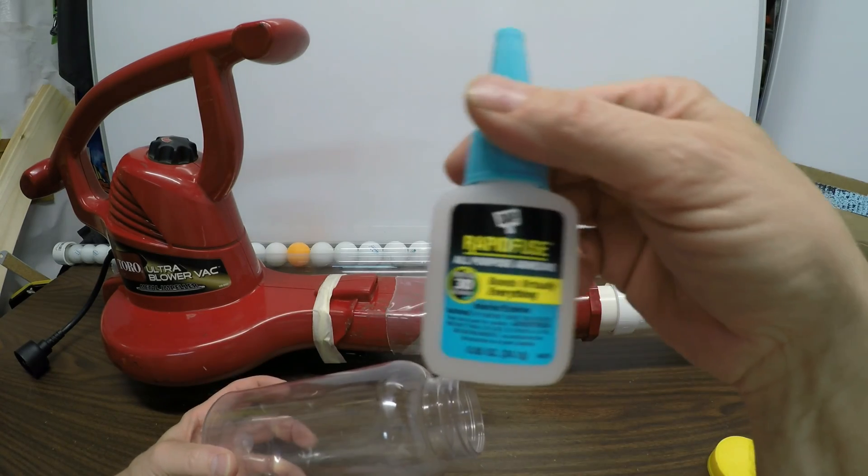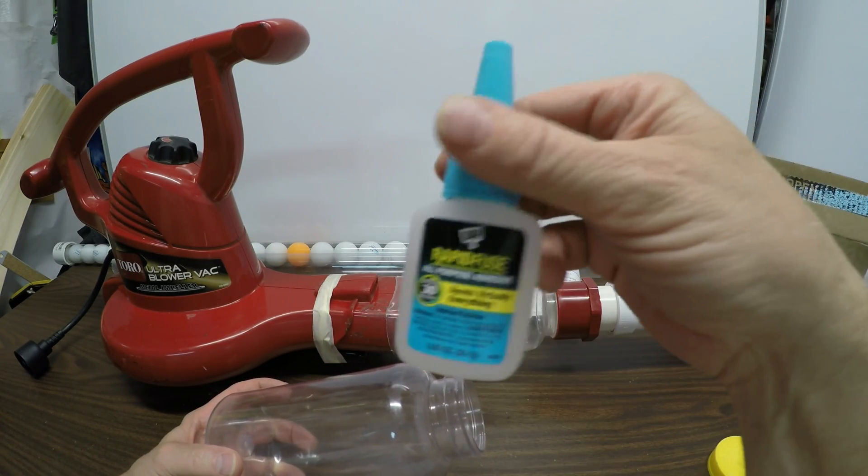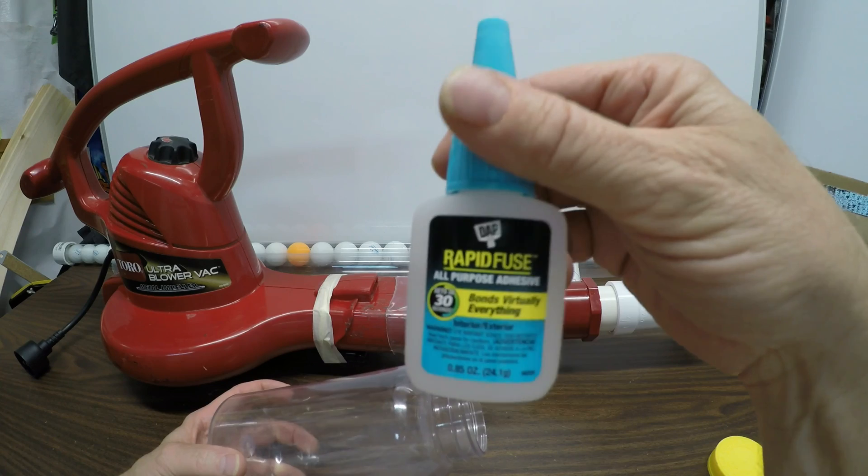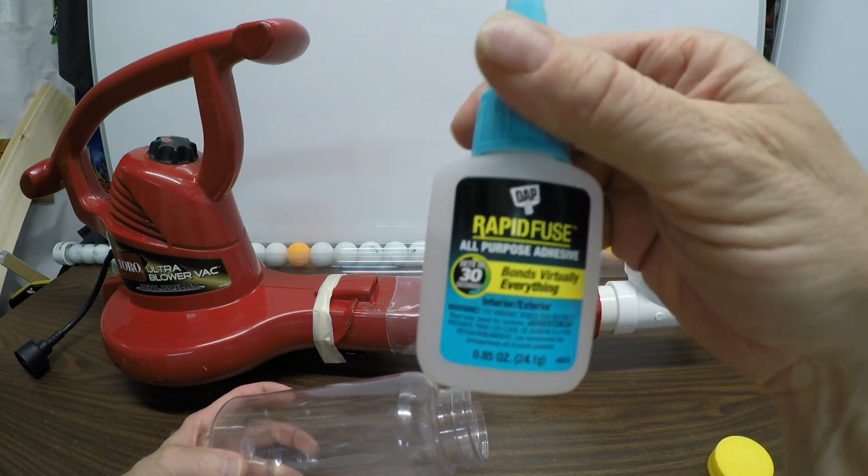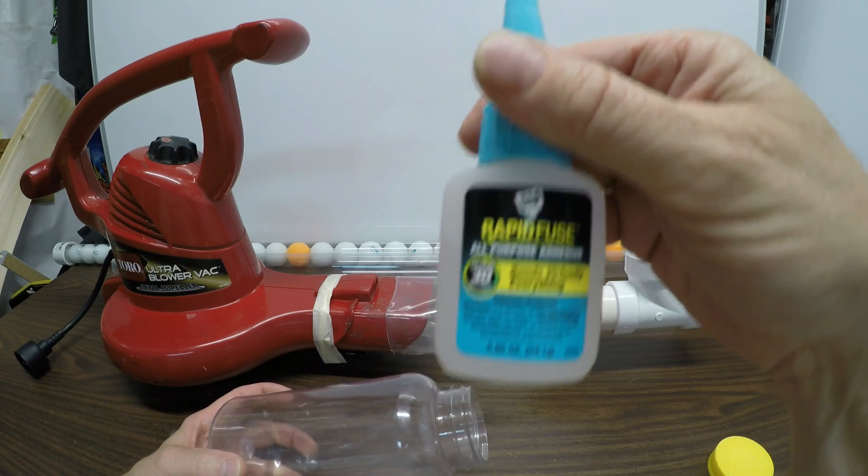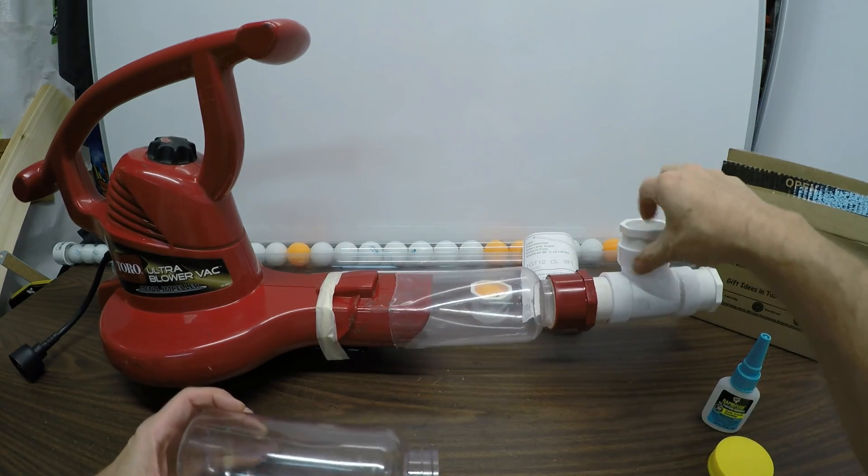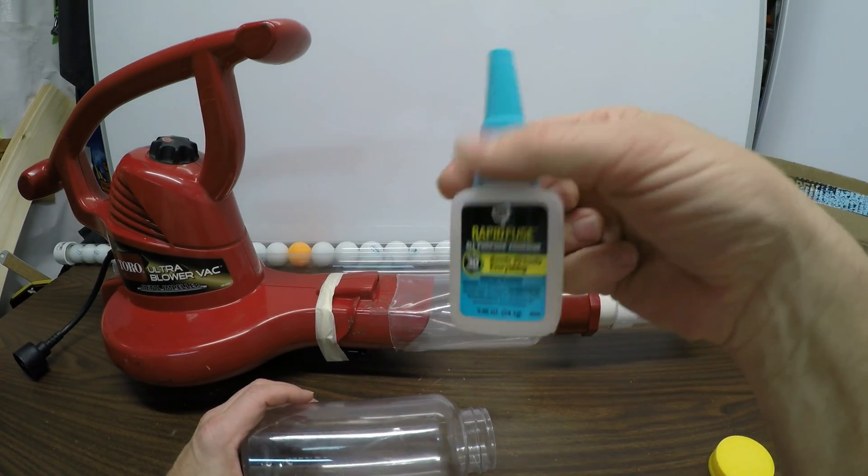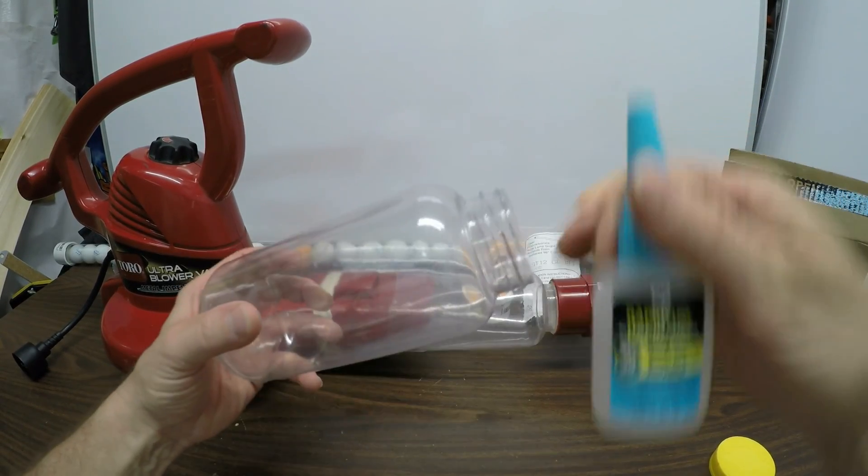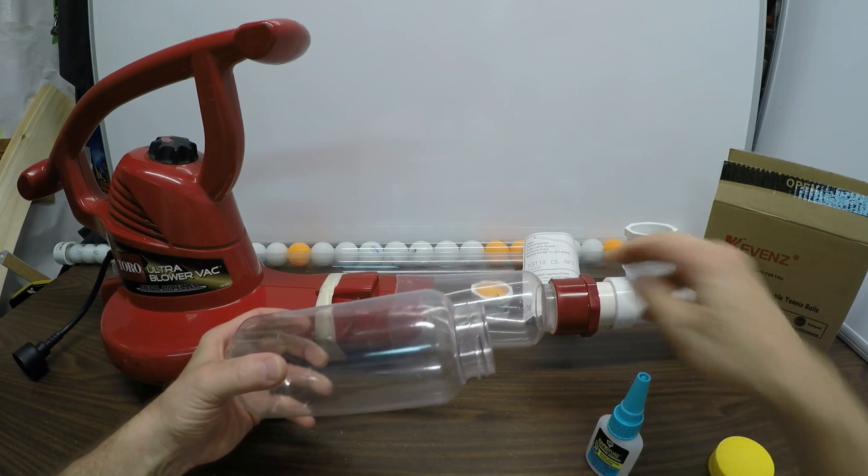I use this rapid fuse glue. I'm using it for all the joints because I can't use regular PVC glue because I'm concerned that the joints will get extra glue on the inside and then this thing won't work. This really worked well. I tried a couple other glues. It didn't work so well for the interface between this lip and the inside here.